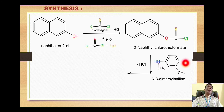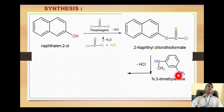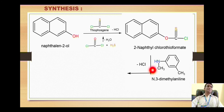This chlorothioformate is then reacted with the next reagent, which is a derivative of aniline — benzene attached with an amino group. On nitrogen we have a methyl group, and at position 3 (where position 1 is the amino-bearing carbon, 2 is next, and 3 is after) we also have a methyl group. So we call it N,3-dimethylaniline.